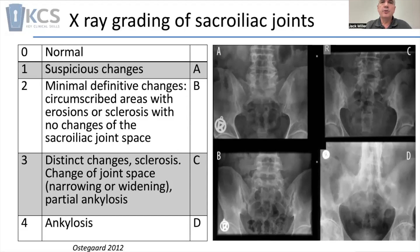We have suspicious changes seen in image labelled A, minimal definitive changes — circumscribed areas with erosions or sclerosis with no changes in the joint itself — seen in image B, and distinct changes in sclerosis.